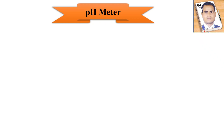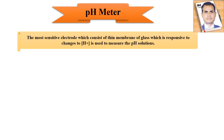It is the most sensitive electrode, which consists of a thin membrane glass that is responsive to the change in H+ ions, and is used to measure the pH of a solution. The pH meter is connected with the electrode, and that electrode we can dip into the solution. The electrode is immediately responsive — it gives some readings because in that solution the hydrogen ions are present, and those hydrogen ions are counted to show the reading.